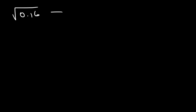Now what is the square root of 0.16? Notice that there are two digits to the right of the decimal point. When you take the square root, the answer should only contain one digit to the right of the decimal point. The square root of 16 is 4, so it's going to be 0.4, since it has one digit to the right.